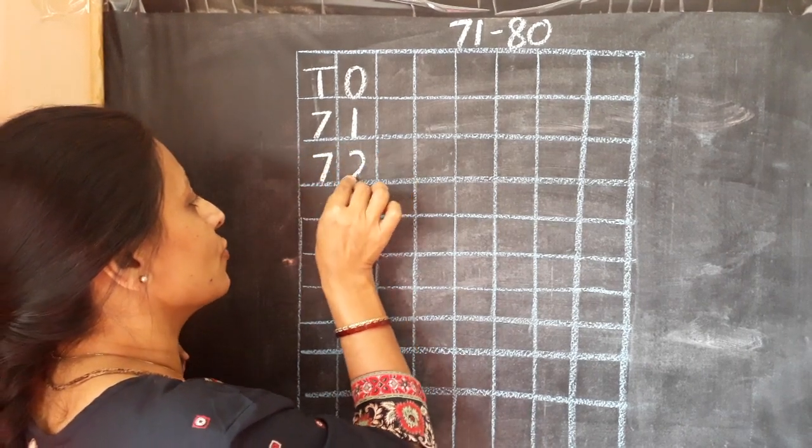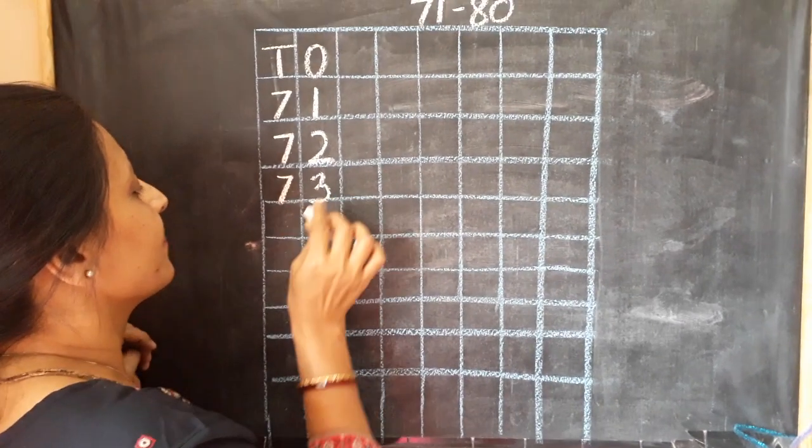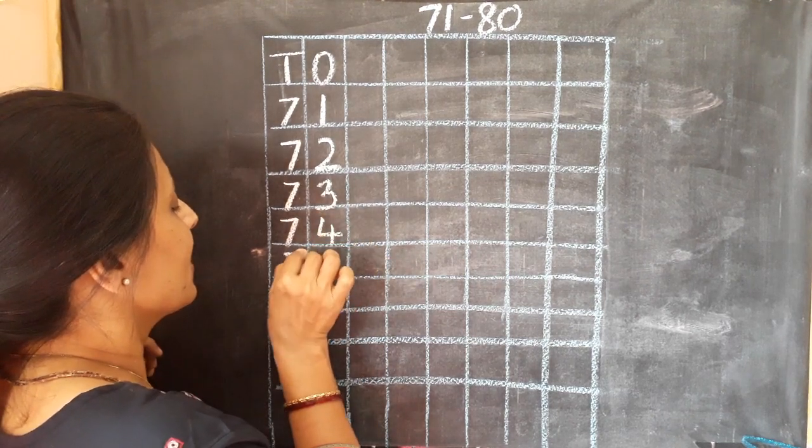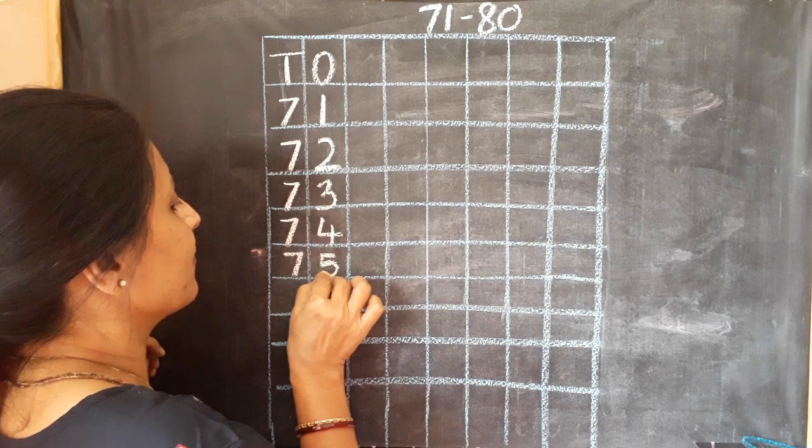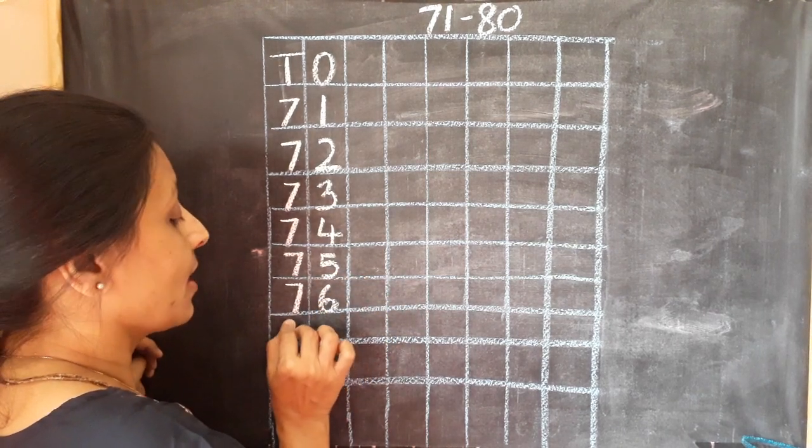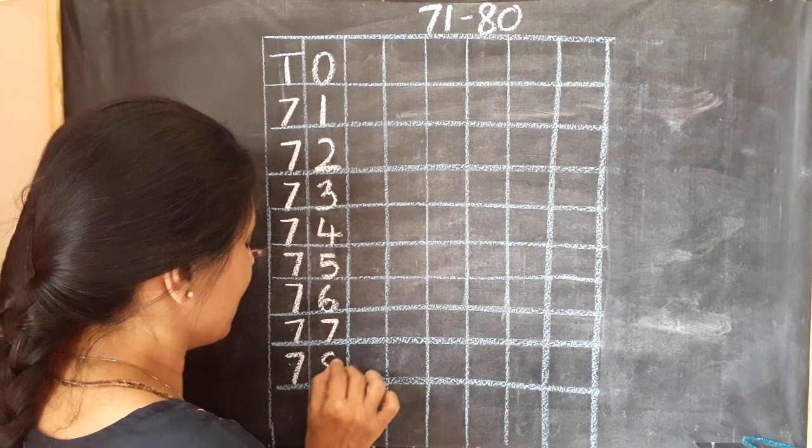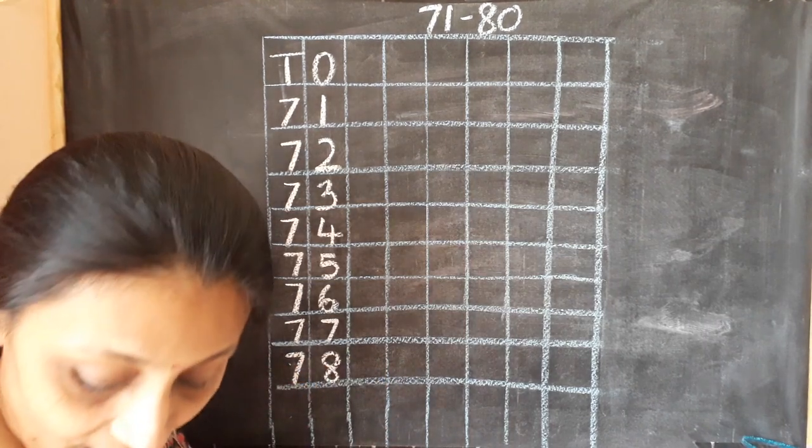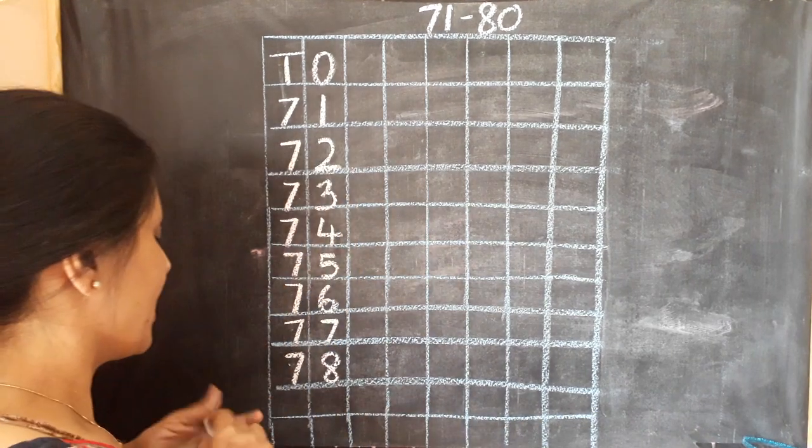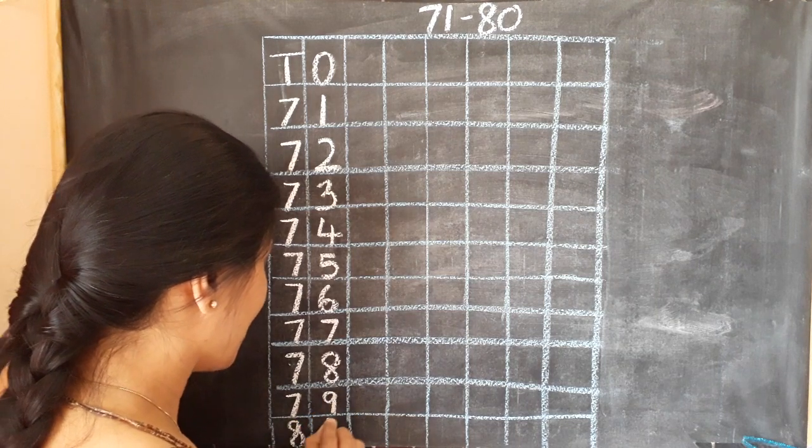72, 72. 73, 73. 74, 74. 75, 75. 76, 76. 77, 77. 78, 78. I have to draw one more line. 79, 79. And 80, 80.